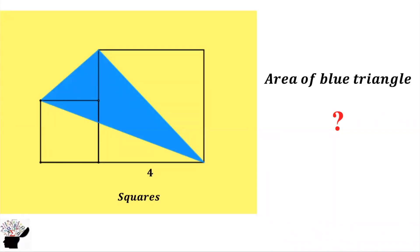Welcome to my YouTube channel. Let's consider this question. We have two squares, and one of the sides of the bigger square is given as 4. How can you find the area of the blue triangle?